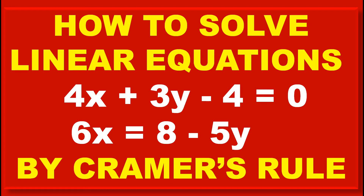Friends, now we have to learn how to solve linear equations 4x plus 3y minus 4 is equal to 0, and 6x is equal to 8 minus 5y by Cramer's rule. We have to solve these linear equations by Cramer's rule.